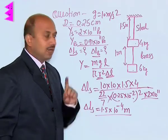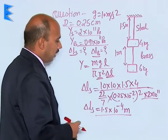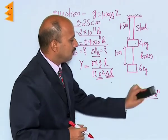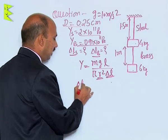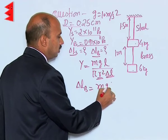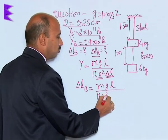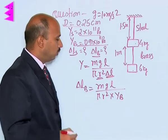Similarly, we can calculate elongation in the brass wire. We write the formula: ΔLb (increase in the brass wire) equals mgL divided by πr² times Young's modulus of the brass wire.